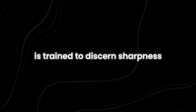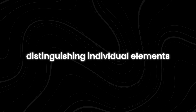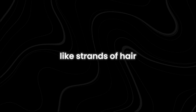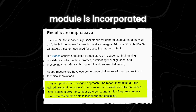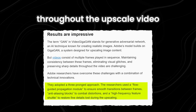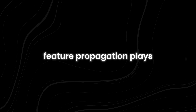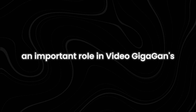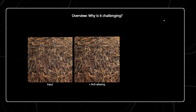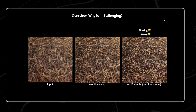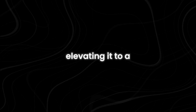Video Gigagan is trained to discern sharpness and clarity in videos, distinguishing individual elements like strands of hair from blurred masses. To ensure consistency across frames, a flow-guided propagation module is incorporated, maintaining coherence throughout the upscaled video. Feature propagation plays an important role in Video Gigagan's capability to enrich videos with new details and features that may not exist in the original input. From skin texture to feather details and hair strands, this process enhances the visual richness of the upscaled footage, elevating it to a new level of realism.